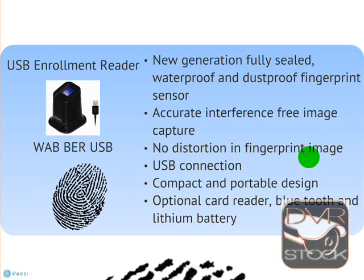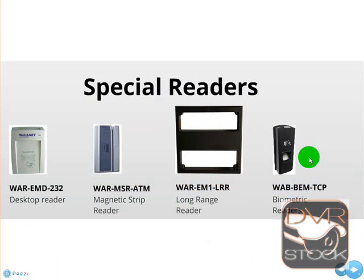We also have a USB enrollment reader — a desktop biometric reader you connect via USB to enroll users. Then there is the long-range reader; the good thing about it is you can read up to about one meter with a passive card.